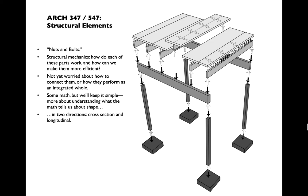Particularly when we're talking about beams and slabs, we'll be looking at them in two directions: longitudinally - what makes a good beam or slab shape in the direction that it's spanning - and also cross-sectionally - what makes a good or efficient beam or slab in its section, or where the material is actually distributed.